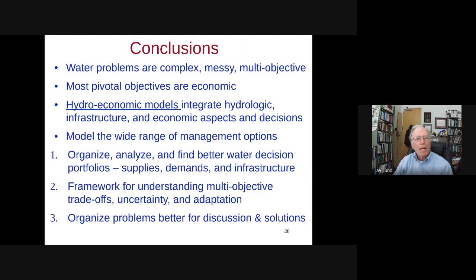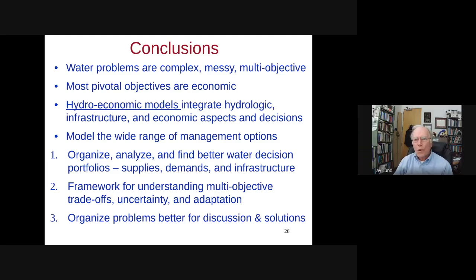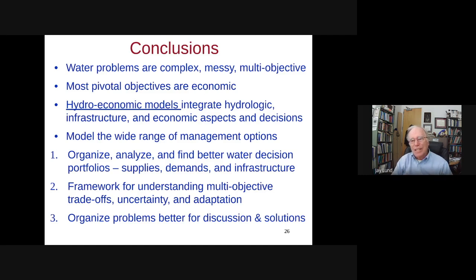Regarding how accurate the predictions are: we did our first optimization model runs in 2001, and by around 2015 I would say most of the recommended changes in operations that the optimization recommended had already been done by pretty smart operators and water managers in California. Optimization results are never perfect, but they do point you in the right direction economically. It's not that people are running the model and doing what it tells them — they're all smart and trying to figure out how to make more money. It's not a bad representation.